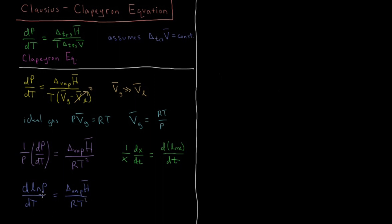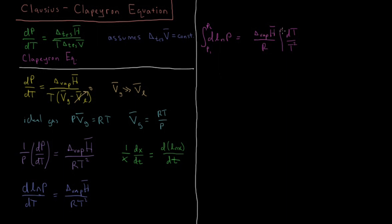We can now integrate both sides of this equation. Multiplying both sides by dT gives d(ln P) = (ΔvapH̄ / R)(dT/T²). We integrate both sides: the left side gives ln P, or ln(P2/P1). We assume that both R and the molar enthalpy of vaporization do not vary with temperature, so we integrate from T1 to T2.